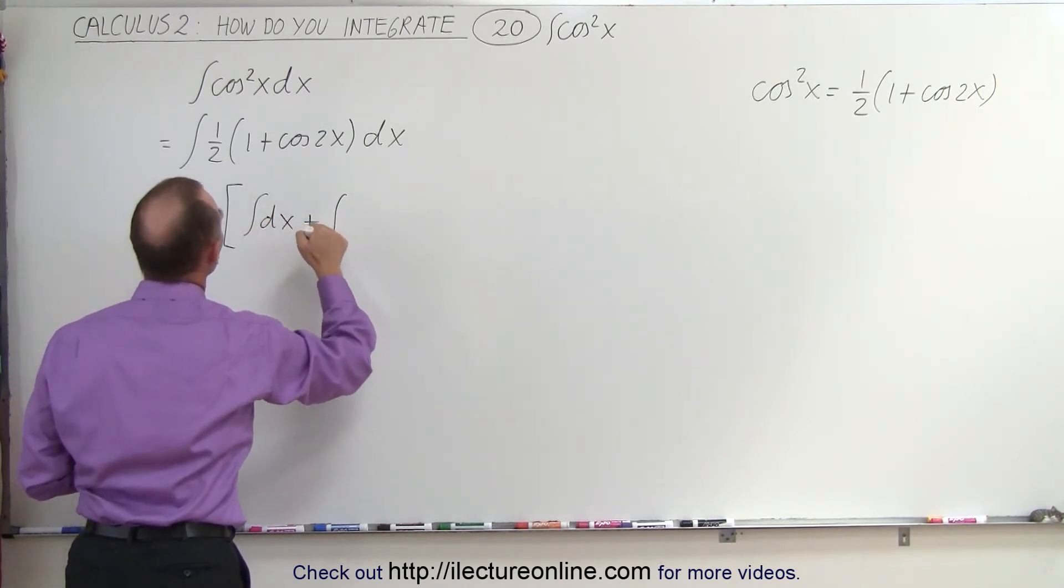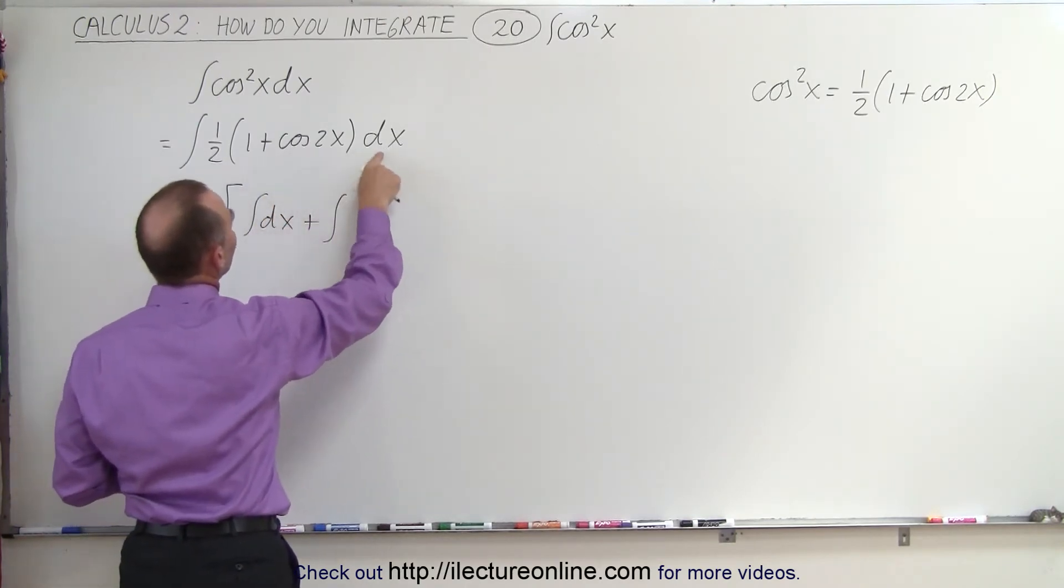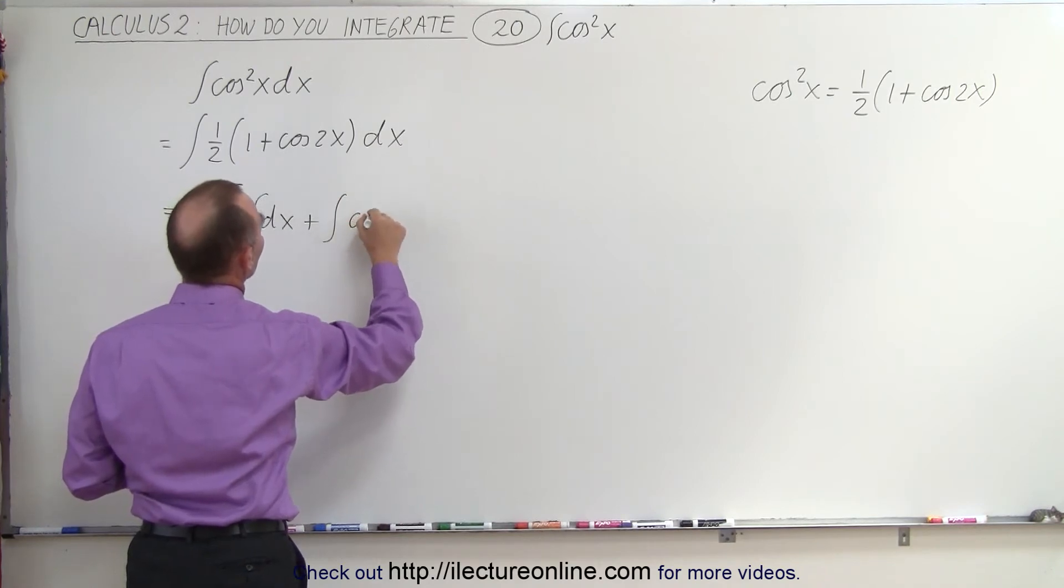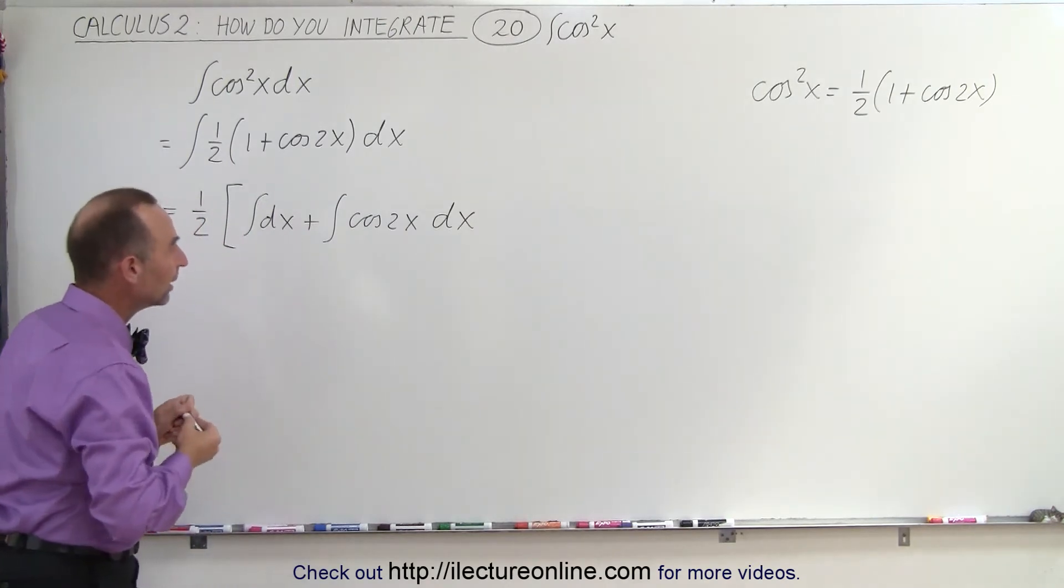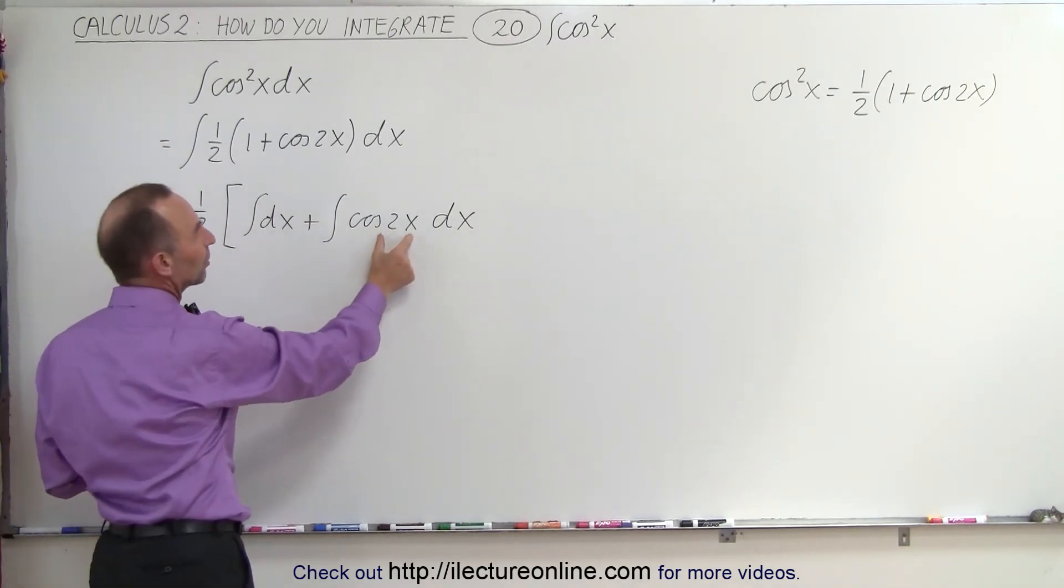Plus the second integral, which is the cosine of two x times dx. So the cosine of two x times dx. Now in order to integrate this, we're going to need the proper differential.